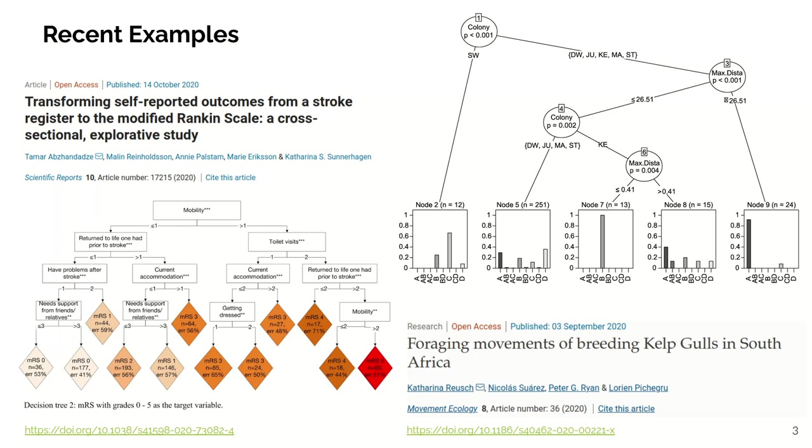So the first example here is for stroke research and the second one is an ecological paper. So completely different research fields use trees for their research.